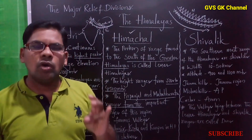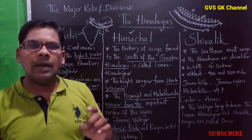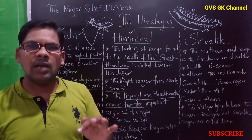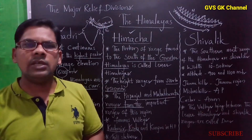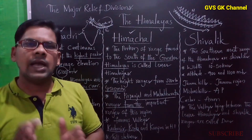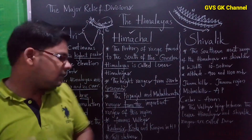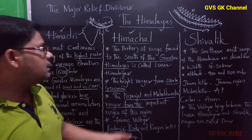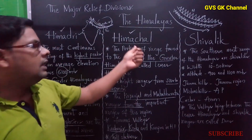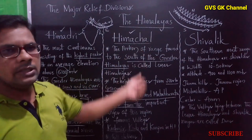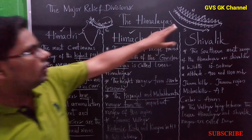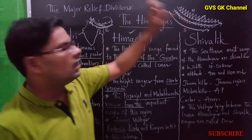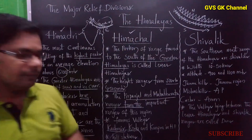The hill stations in the Himachal region include Nangaparbat, Cho Oyu, Annapurna, Dhaulagiri, and Makalu. These hill stations are present in the Himachal region. It is the second most important range of the Himalayas.